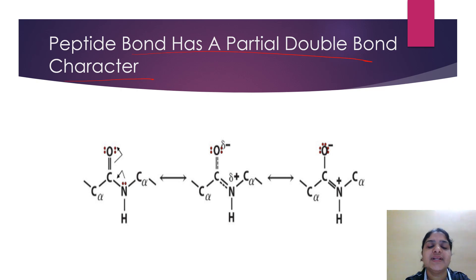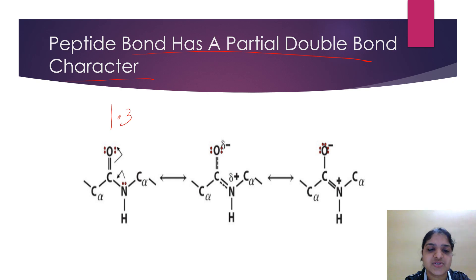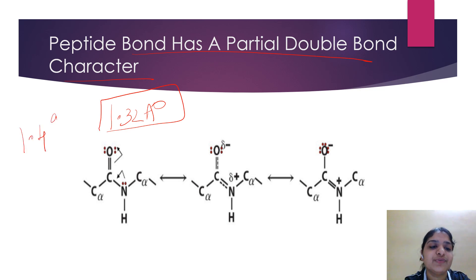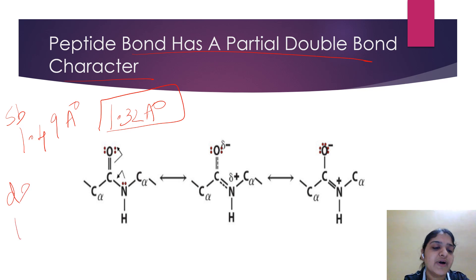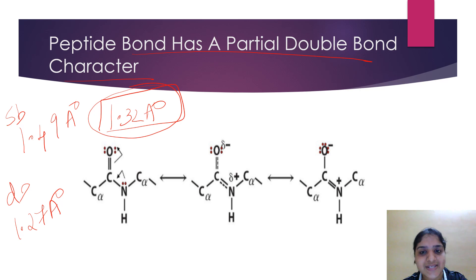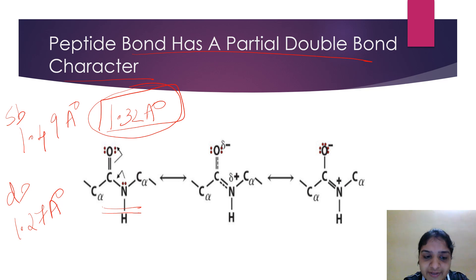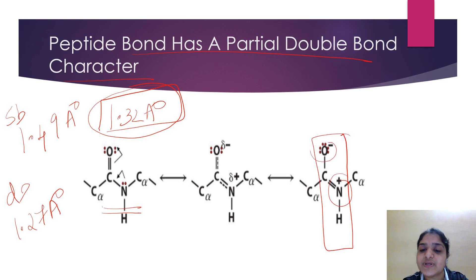The first characteristic: the peptide bond has partial double bond character. The bond length within the peptide bond is 1.32 angstroms, which is midway between a single bond (1.49 angstroms) and a double bond (1.27 angstroms). The peptide bond has some double bond character due to resonance — there is partial sharing of electrons between the carbonyl oxygen and the amide nitrogen.